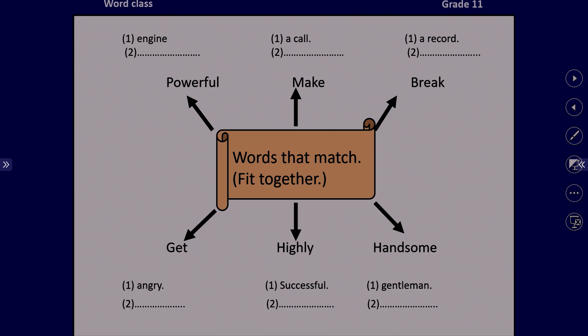In the next activity, we have a spider-gram with the words: powerful, make, break, get, highly, and handsome. We say powerful engine, make a call, break a record, get angry, highly successful, and handsome gentleman. Now there are some blanks for you to think of one more word for each. Take your notebook and write down some words.